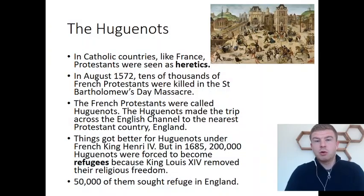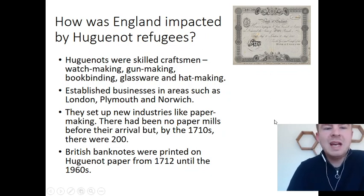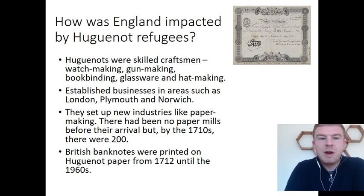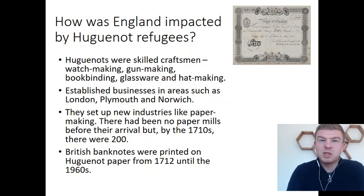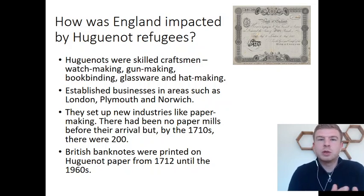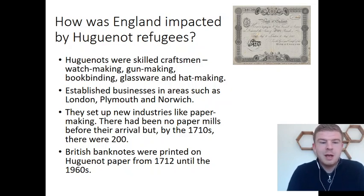50,000 of them sought refuge in England in 1685. How was England impacted by these Huguenot refugees? Huguenots were skilled craftsmen — they made things like watches, guns, they did bookbinding, making hats, and were good with glass. These became really important industries that the Huguenots brought over to Britain. They established businesses in areas such as London, Plymouth and Norwich. And one of the main things they introduced was paper making — before the Huguenots arrived, there had been no paper mills at all in England.